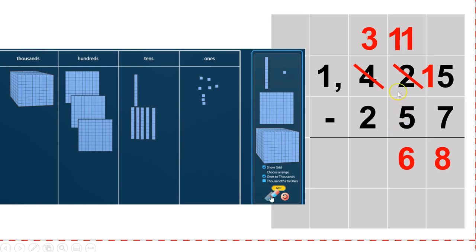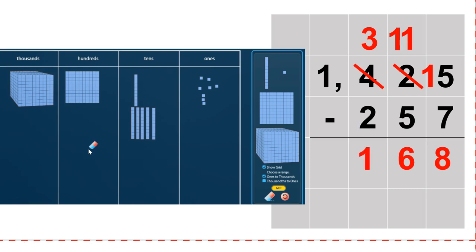I keep moving over to the hundreds place. I can do three minus two, so I'm going to take away two hundred, leaving me with one. And I don't have anything to take away in the thousands, so I just want to make sure I bring that number down. So my answer — in subtraction we call our answer the difference — is one thousand, one hundred and sixty-eight.